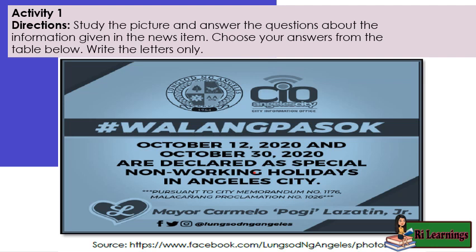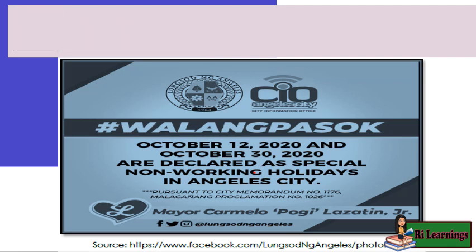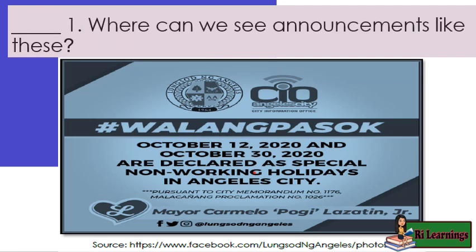Activity one directions: study the picture and answer the questions about the information given in the news item. Choose your answers from the table below and write the letters only. Question one: where can we see announcements like these?